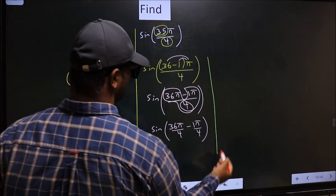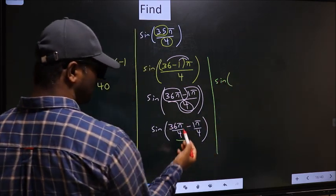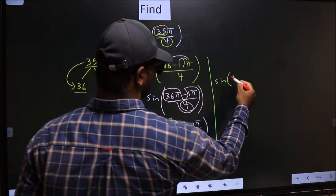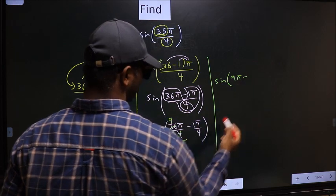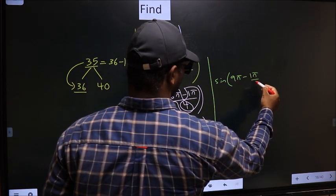Next, sin. Now here you should cancel. 4 ones, 4 nines. So we get 9π minus this no change, 1π by 4.